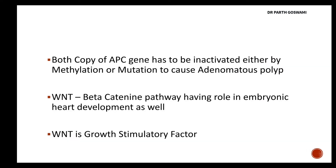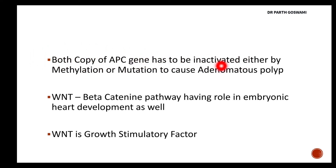For the development of adenomatous polyp and cancer, you need both copies of the APC gene to be inactivated. Both alleles should be inactivated either by mutation or by epigenetic methylation. Through these two processes, both copies of the APC gene can be inactivated. If you have mutation in only one copy, you will not develop polyp or cancer.